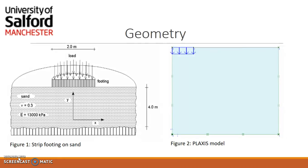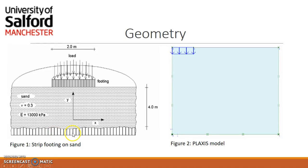Figure 1 shows our model. Our footing is 2 meters long and the sand is 4 meters in depth. We have some properties here: the Poisson's ratio is 0.3 and our Young's modulus is 13,000. The bedrock at the bottom will not be modeled using Plaxis.